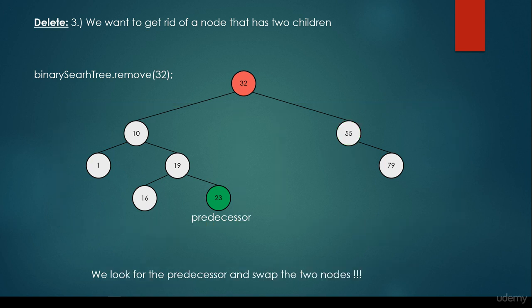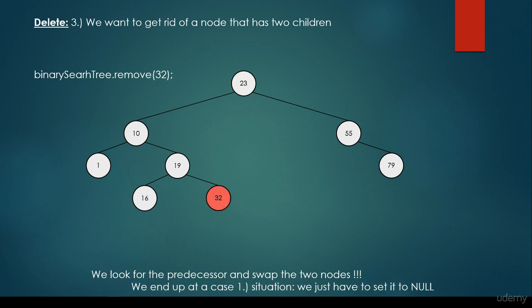We have to swap the root node, for example with the predecessor — we could swap it with the successor as well, but in my implementation I'm going to use the predecessor. Why is it good? Because we will end up at case 1 or case 2: in this case, the 32 node doesn't have any children, so it is a leaf node and we know how to get rid of it — we just set it to null. Or we are going to end up with a situation where it has a single child. So when we swap with the successor or the predecessor, we always end up in case 1 or case 2.